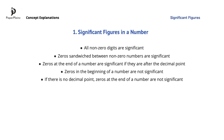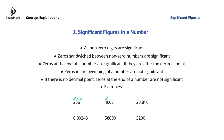Let's apply these rules in a few examples. Since all nonzero digits are significant, the 2, the 5 and the 6 in 256 are all significant. Zeros sandwiched between nonzero numbers are significant, so all 4 numbers in 4007 are significant.